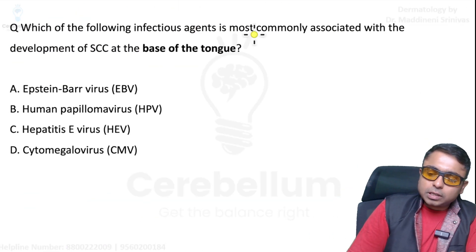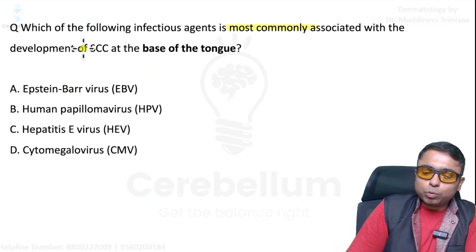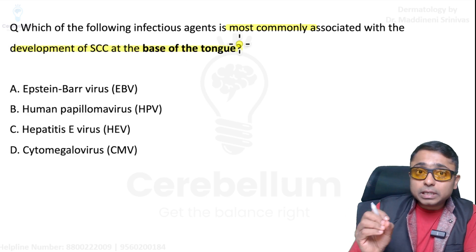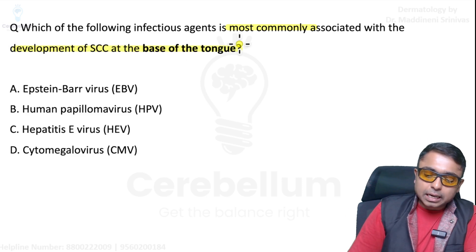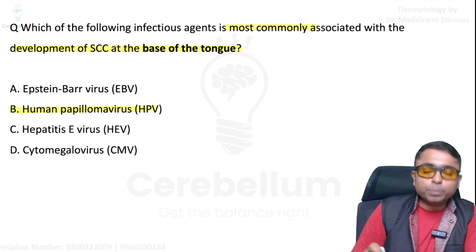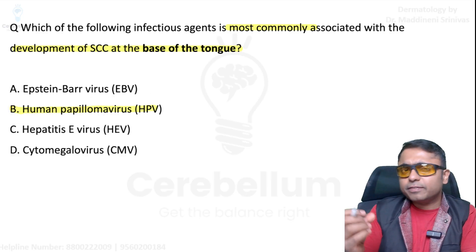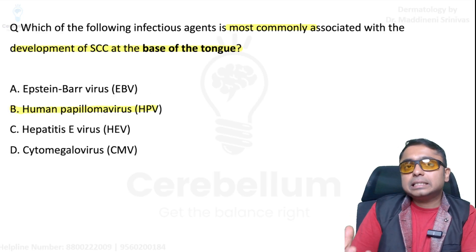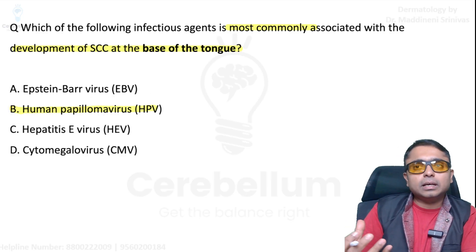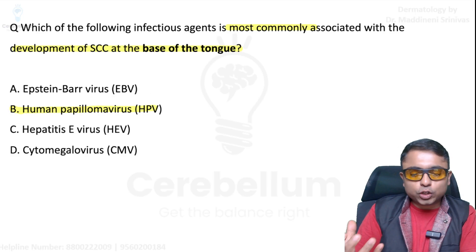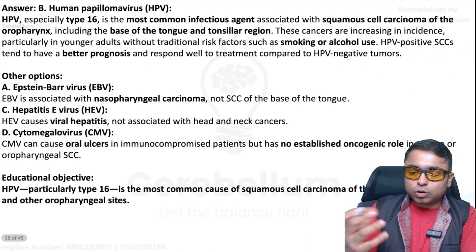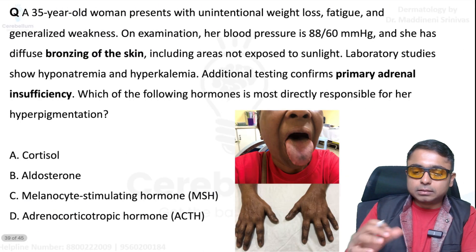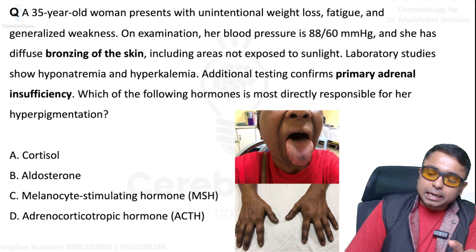The next is a straightforward question: the most common organism associated with base of tongue squamous cell carcinoma is HPV — human papillomavirus. If you feel something was different in the question or options, put your comments and suggestions in the comment section.